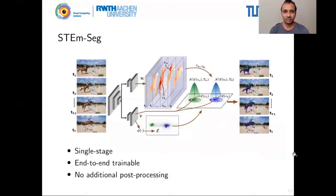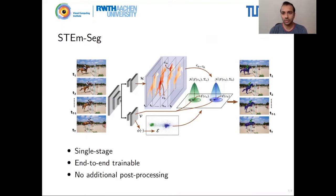We try to solve some of these problems with our proposed method STEMSEC. It is a single-stage, end-to-end trainable model applicable to all three tasks. STEMSEC takes as input a video clip of fixed length, passes it through an encoder based on 2D convolutions, and then through a 3D decoder which generates embedding vectors in the space-time volume. These can be directly clustered for the entire clip to generate segmentations that are inherently tracked over time.